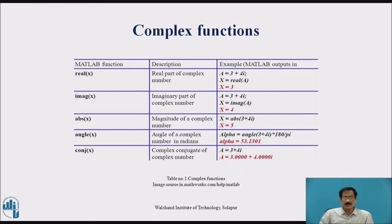The magnitude of a complex number will give abs(A) equals 5. Then, the angle of a complex number in radians comes out to be 53 degrees. The complex conjugate of a complex number will be A equals 3.00 minus 4i.